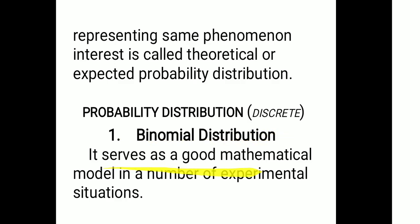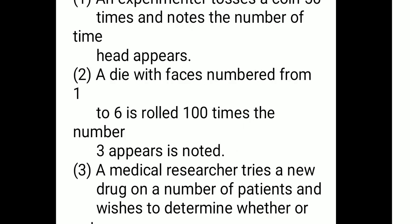Binomial distribution serves as a good mathematical model in a number of experimental situations. Consider the following cases. First, an experimenter tosses a coin 50 times and notes the number of times that head appears.